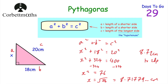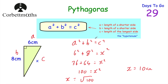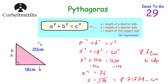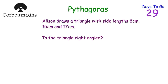We've now looked at using Pythagoras's theorem to find the longest side and a shorter side of a right-angled triangle. Pythagoras's theorem can also be used to show whether a triangle is right-angled or not. If a triangle is right-angled, then Pythagoras's theorem will work. Here's the next question — feel free to press pause and try it yourself, then press play when you're ready.